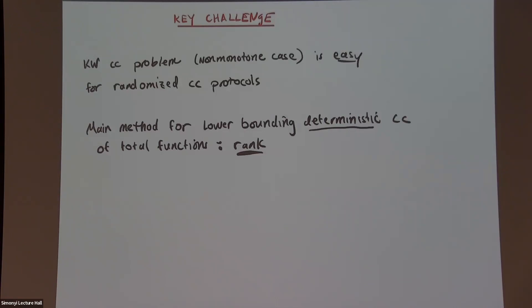So the reason there's a problem is that we don't have too many methods to prove lower bounds for functions or search problems that are easy randomized and hard deterministic. Basically the main method for lower-bounding deterministic two-player communication complexity is to look at the communication matrix and show that the rank over the reals is large. A protocol partitions the communication matrix into sub-rectangles, and at the end the sub-rectangles at the leaves must be monochromatic — all ones or all zeros if F is Boolean.